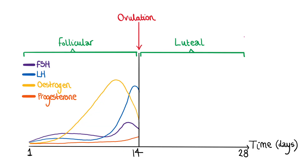That dominant follicle then starts to release even more estrogen than before. This time, instead of setting up a negative feedback loop, that estrogen sets up a positive feedback loop — telling the hypothalamus to release GnRH, which then tells the anterior pituitary to release FSH and LH again. We get a surge in those two peptide hormones, and the LH surge in particular is responsible for ovulation around day 14, when the oocyte is released from the dominant follicle.